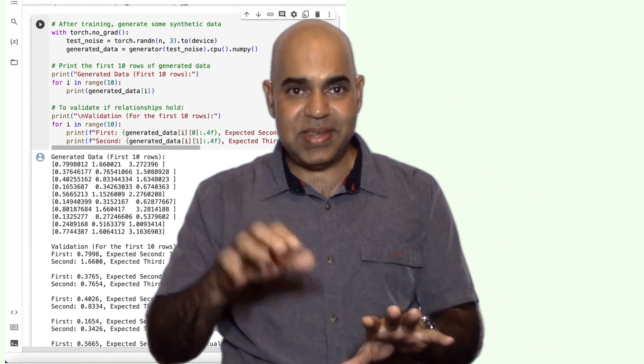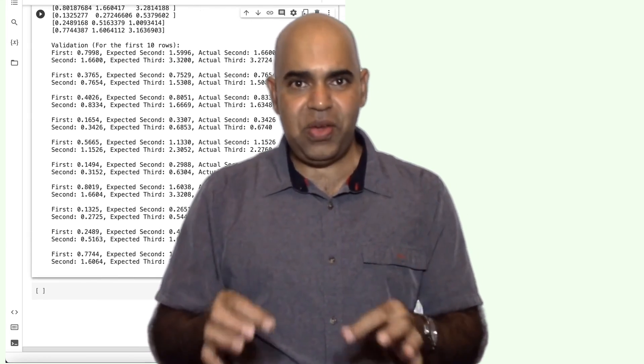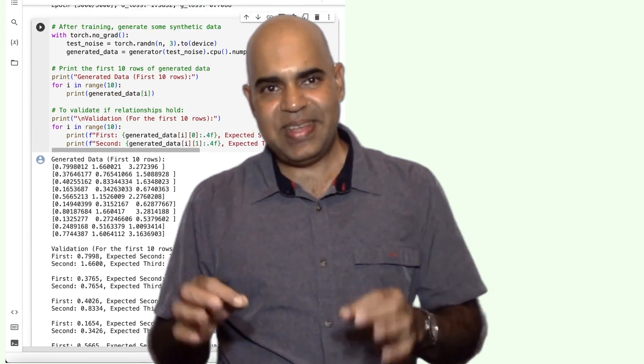This Google Colab notebook is linked in the description below. Instead of a GAN, you could use a diffusion-based generative model to generate data points. I have linked a video on diffusion-based generative models in the description. Thank you and see you soon again.